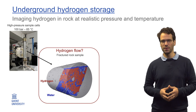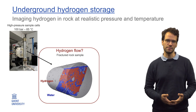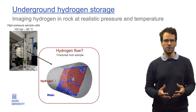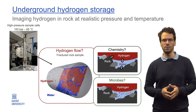To make this as realistic as possible, we have special flow cells in which we can recreate the high pressures and temperatures that we find this deep below the ground, while we image the groundwater and hydrogen injection. This is a good example of the elaborate setups that we often build around our microCT instruments to precisely control the sample conditions. We also use this setup to study the chemical and microbial processes that can be triggered by this fluid flow.